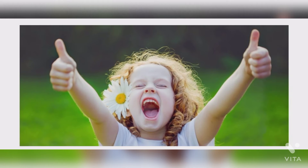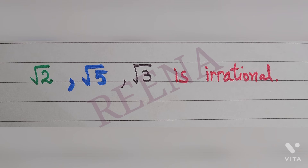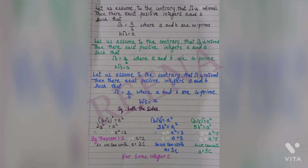For better understanding, I am taking three questions simultaneously. The basic steps are: √2 is rational, there exist positive integers a and b such that √2 = a/b where a and b are co-prime, giving b√2 = a. The same steps are followed for √3 and for √5. The second step is squaring both sides: (b√2)² gives 2b² = a².